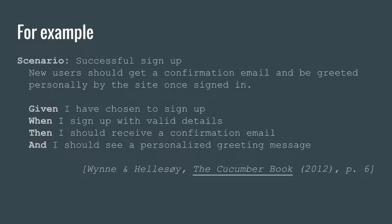Here is an example of a Behat test — a scenario called 'Successful sign-up.' Given I've chosen to sign up, when I log in, then I should receive an email and I should see a greeting. This follows our story-level BDD principles: it's an acceptance test, it's in a business-readable language our product owners understand, the context-action-outcome structure is clear, and it's declarative — it doesn't spell out all the steps I need to take.